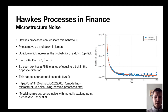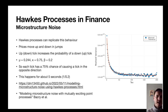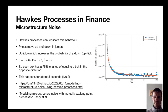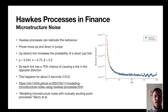A Hawkes process can replicate this behavior by setting up a model where prices move up and down in jumps. The price consists of all the times it moves up minus all the times it moves down on a given timescale, and these jumps arrive as a Hawkes process. The self-exciting component is where an uptick increases the probability of a downtick and vice versa — implying mean-reversion behavior. Fitting this model to the data gives mu = 0.244, kappa = 0.75, and beta = 0.2, meaning a 75% chance of causing a tick in the opposite direction, happening roughly five seconds afterwards — a very practical effect. For full details you can read my blog post on modeling microstructure noise with mutually exciting point processes in Julia.